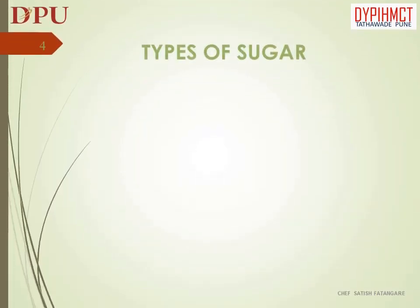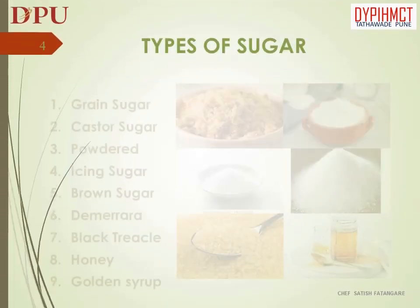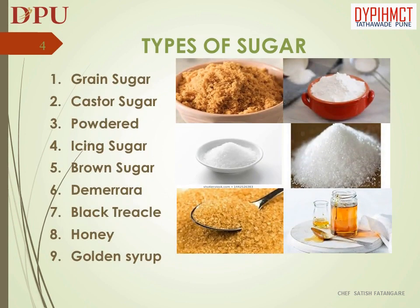In this slide we will discuss about types of sugar. Types of sugar are: Grain sugar, Custard sugar, Powdered sugar, Icing sugar, Brown sugar, Demerara, Black treacle, Honey, and Golden syrup.